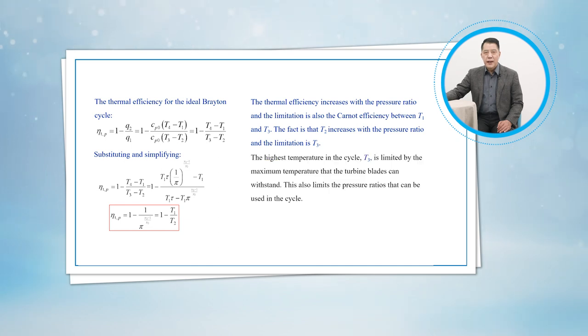The highest temperature in the cycle, T3, is limited by the maximum temperature that the turbine blades can withstand. This also limits the pressure ratios that can be used in the cycle.